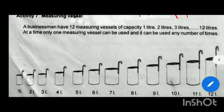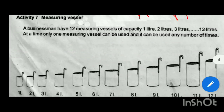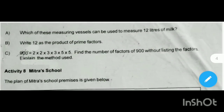A businessman has 12 measuring vessels of capacity. Only one measuring vessel can be used at a time, and it can be used any number of times. The vessels include 1-liter, 2-liter, 3-liter, up to 12-liter. Which of these measuring vessels can be used to measure 12 liters of milk?